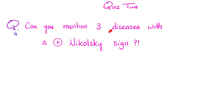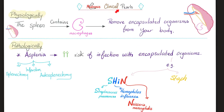Quiz time: can you mention three diseases that give a positive Nikolsky sign? Let me know in the comments — you'll find the correct answer in the next video. Clinical pearl: the spleen contains splenic macrophages that remove encapsulated organisms. If you remove the spleen or have a disease that destroys it, you'll have increased risk of infection with encapsulated organisms — such as staph, because staph has a polysaccharide capsule.